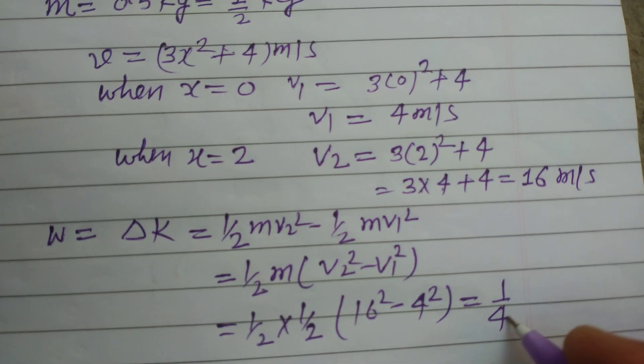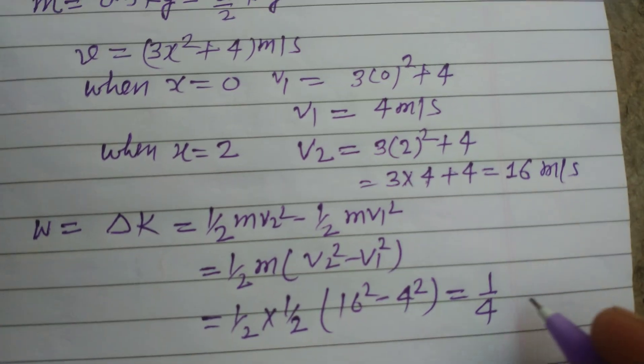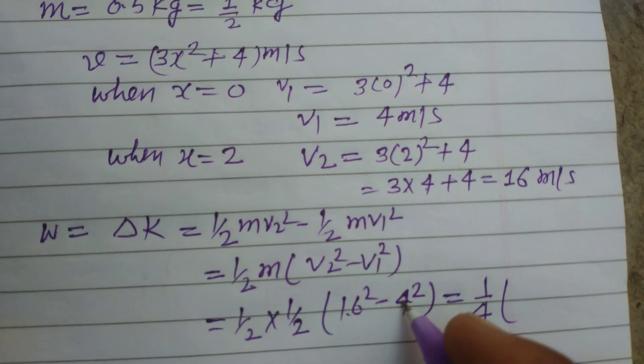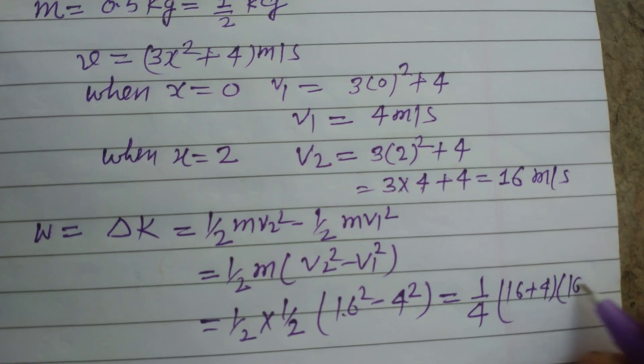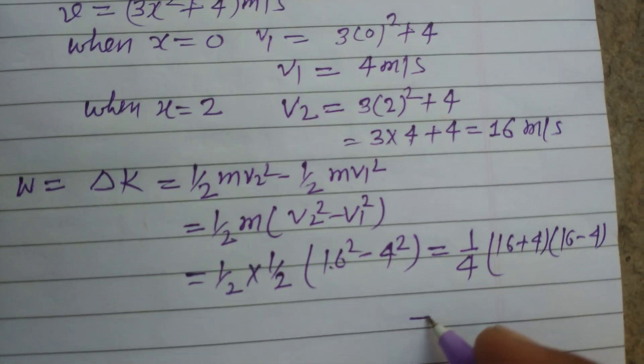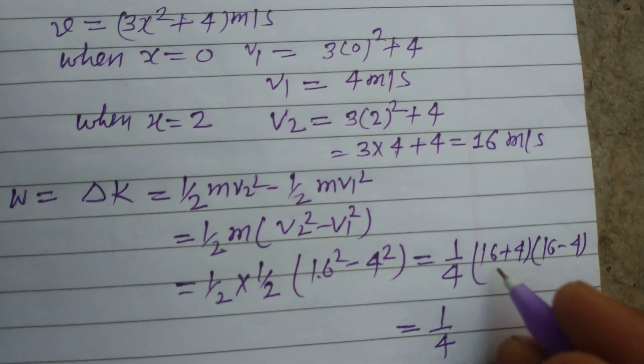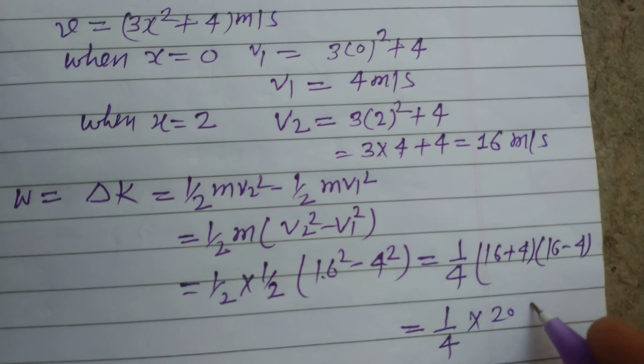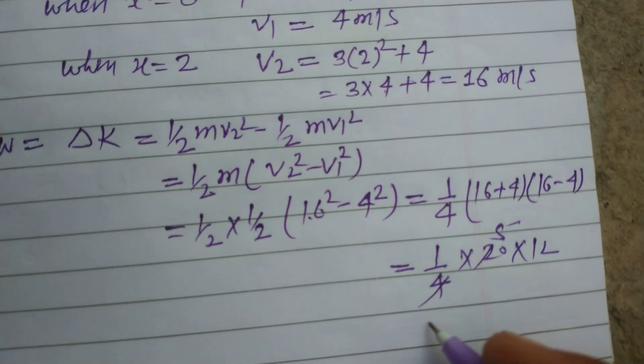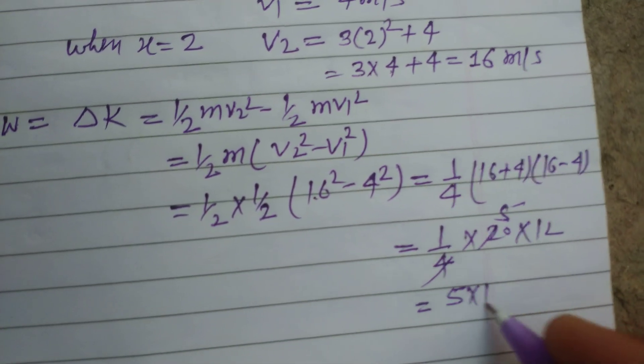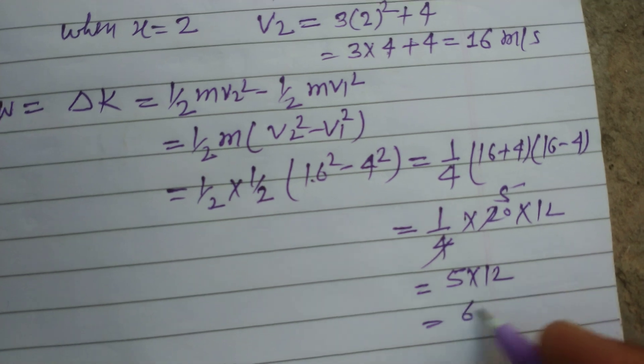So this is 1 by 4, 1 by 2 into 1 by 2 is 1 by 4. And now a square plus b square we use, 16 plus 4 into 16 minus 4. So this is 20 into 12, 4 times 5 into 20. Now 5 into 12, so this is 60.